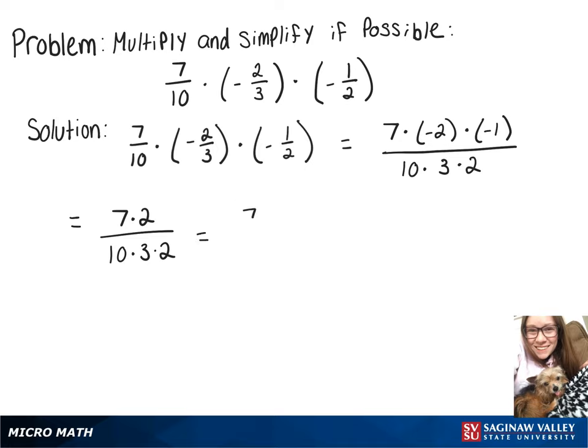We can rewrite that as 7 over 10 times 3 times 2 over 2, since we have 2 on top and 2 on bottom. Our 2 over 2 is just going to cancel out because it's just 1, and then we're left with 7 over 10 times 3.